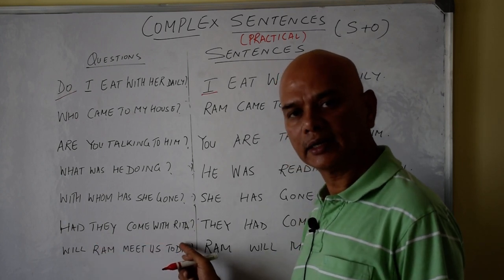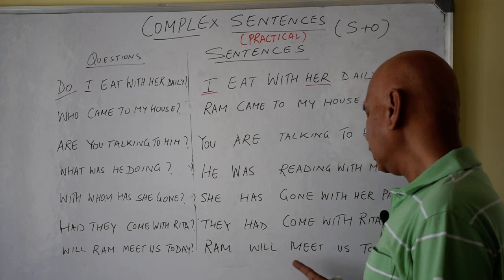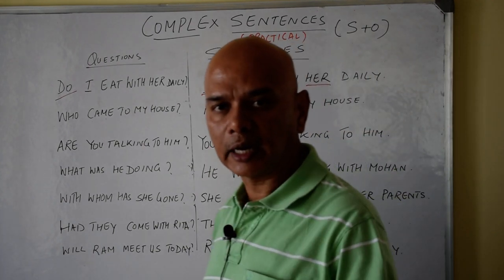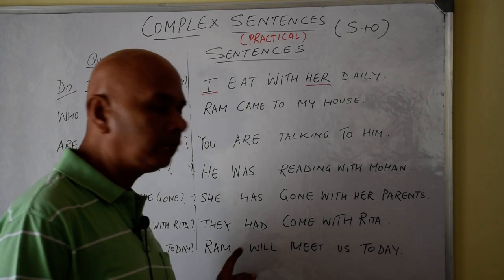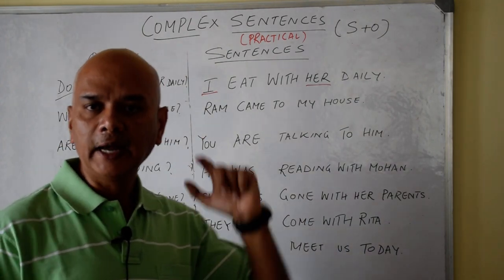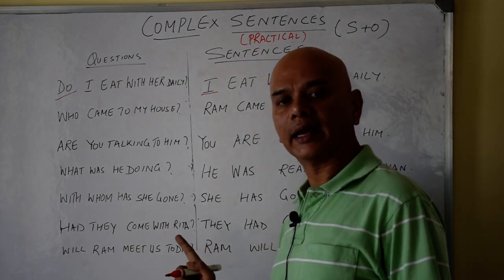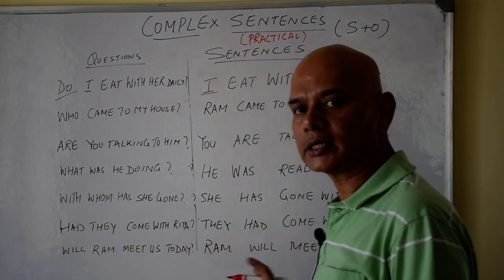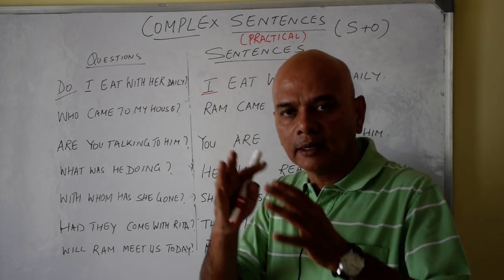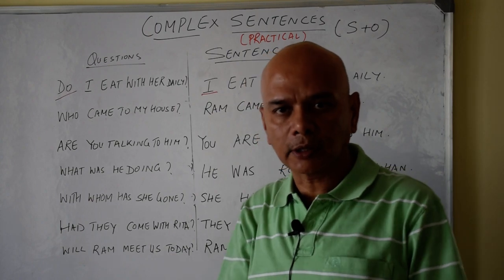They had come with Rita. The question: had they come with Rita? Yes, they had come with Rita. Next: Round will meet us today. Here 'us' is another object. The question: will Round meet us today? Yes, Round will meet us today.